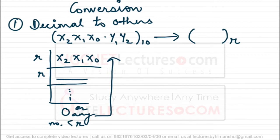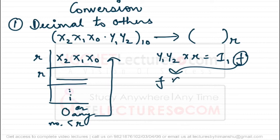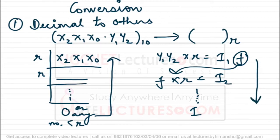For the fractional part, you multiply it repeatedly with r. When you multiply the fractional part with r, you get some integral part and some fractional part. You take that fractional part and multiply again with r, repeating until you get a complete integer. You then read from top to down — the top is the MSB and the bottom is the LSB of the required fractional part.